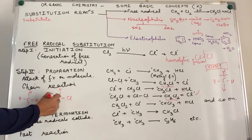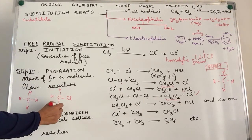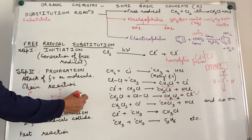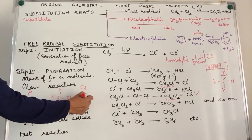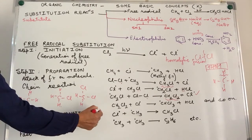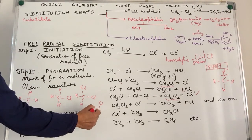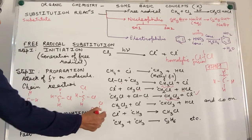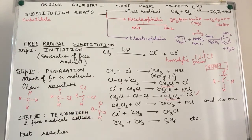So, first, we have one hydrogen being replaced by chlorine. We have the second hydrogen being replaced by chlorine. We have the third hydrogen being replaced by chlorine, giving us a range of products.